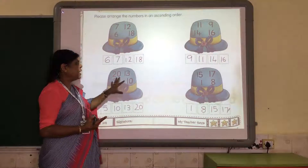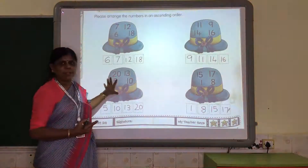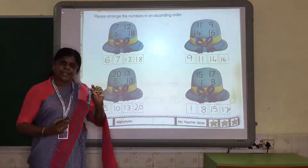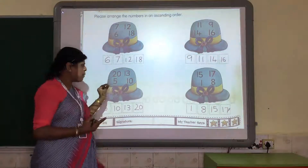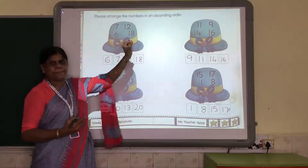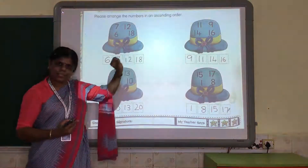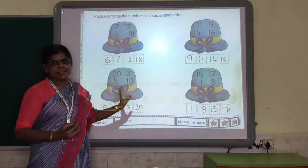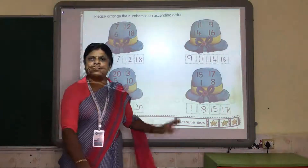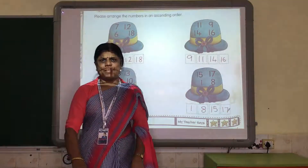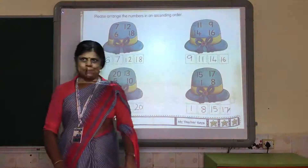So this is called ascending order — from the small number to the biggest number. Got it? Sit at home and try to do this activity at home.